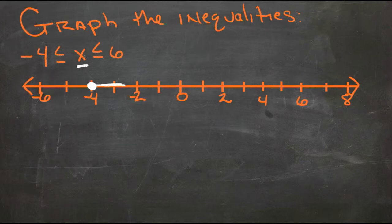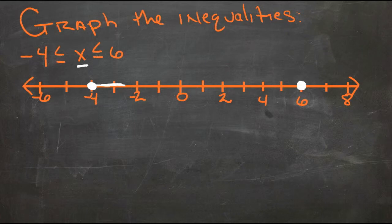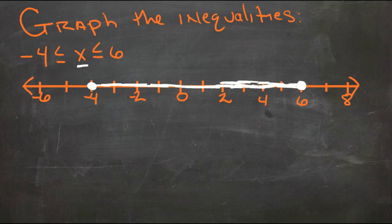Then X also needs to be less than or equal to 6, so it can only go as far as 6 — which it can equal. We shade between negative 4 and positive 6, and those are all the numbers that X can be, so those are the numbers that should be shaded.